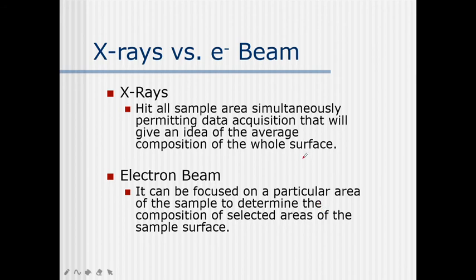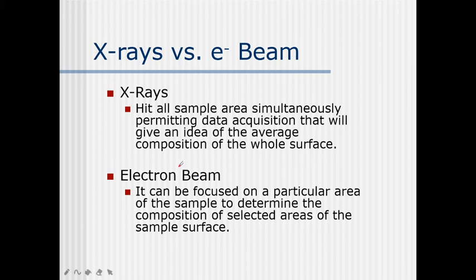Now, X-rays versus electron beam. There are two sources: X-rays and electron beam. X-rays hit all the sample area simultaneously, permitting data acquisition that gives an idea of the average composition of the whole surface. An electron beam, however, can be focused on a particular area of the sample to determine the composition of selected areas. So the electron beam is more specific for selected areas, whereas X-rays provide larger-area data acquisition.